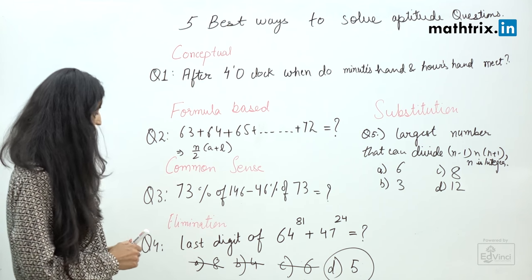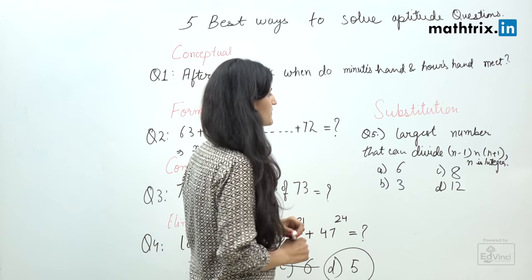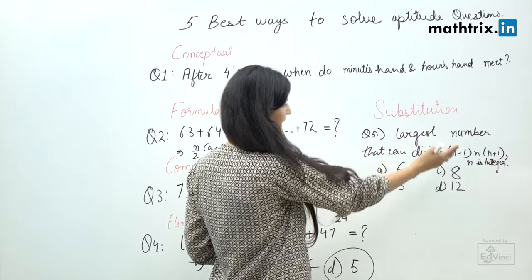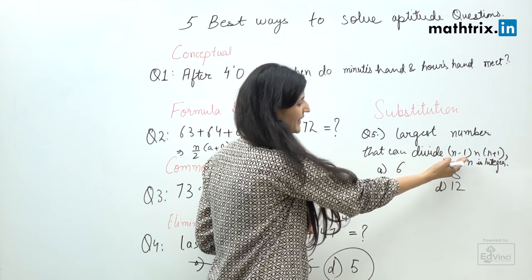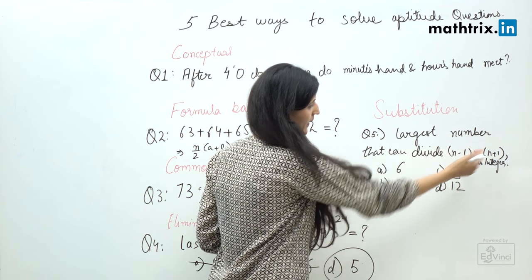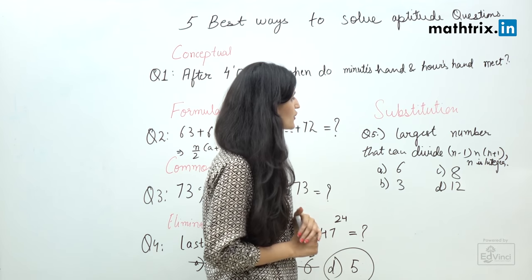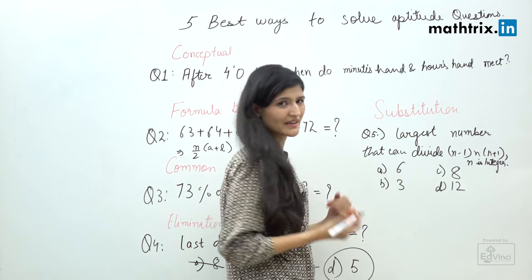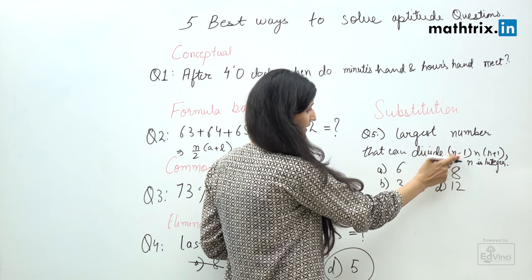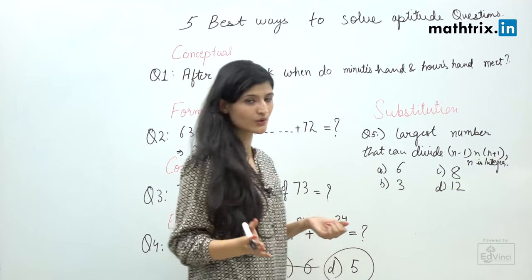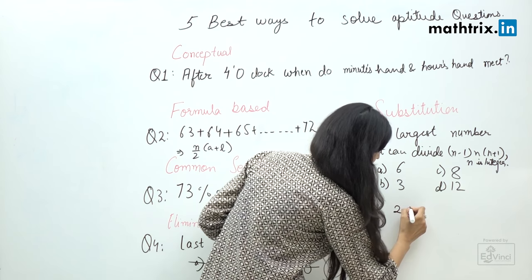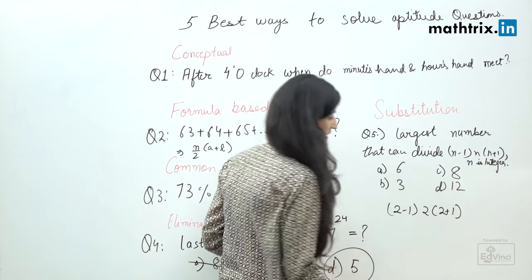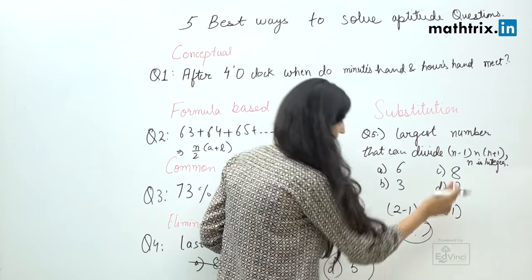Moving on to the next approach, which is substitution approach. The question here I have is: largest number that can divide (n-1) × n × (n+1), where n is integer. Let's solve this by substituting. We can start substituting with 1, but I will not do that because 1 minus 1 is 0 and the whole number will come as 0. So let's start with 2, where I'll get (2-1) × 2 × (2+1), which is nothing but 6.